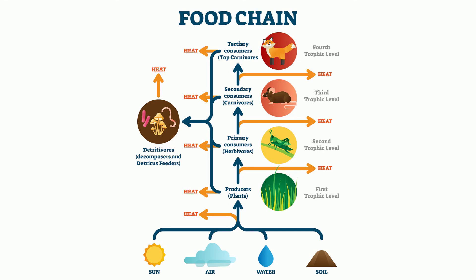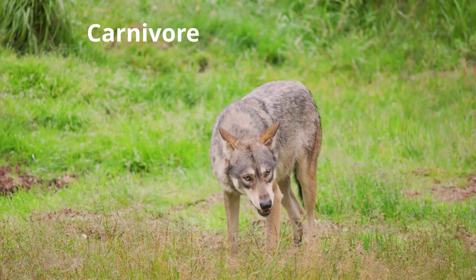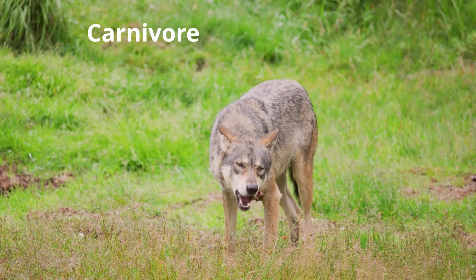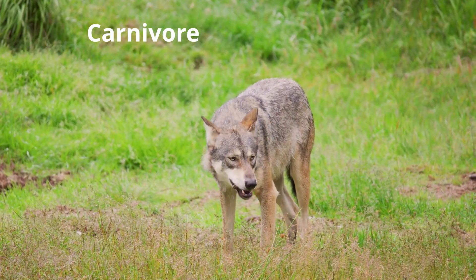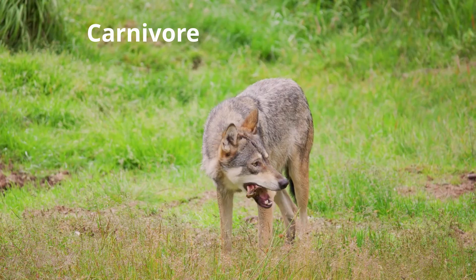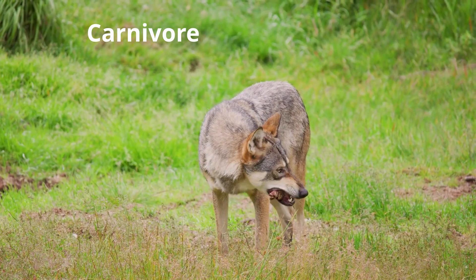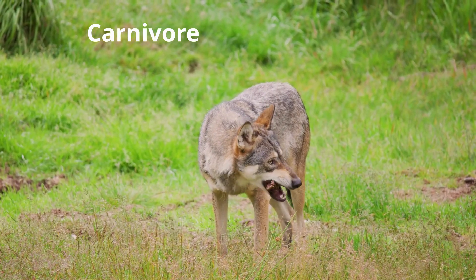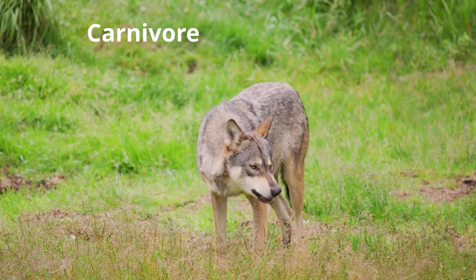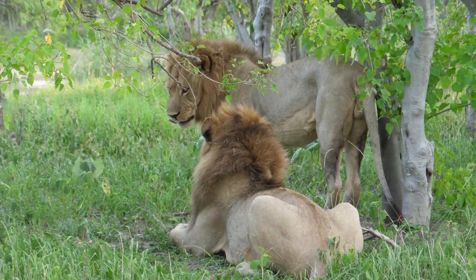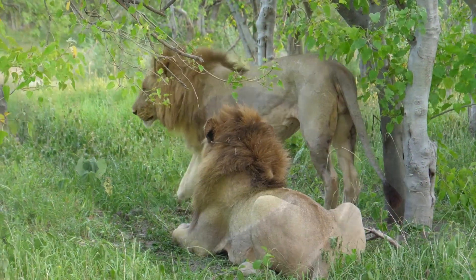Heterotrophs are also called consumers because they consume other organisms. There are four main types of heterotrophs. Carnivores, which eat mainly the meat of other organisms. They are considered predators because they hunt their prey in order to gain energy from the prey. Common examples would be a lion and many snakes.